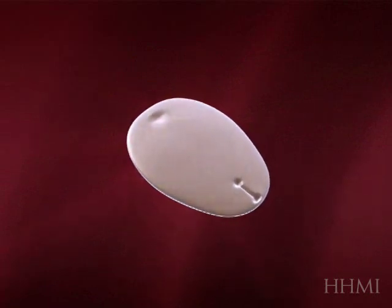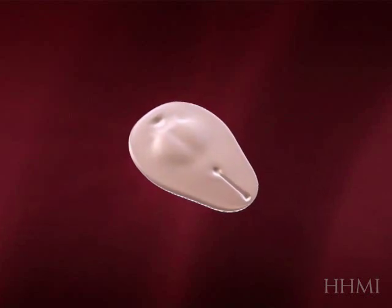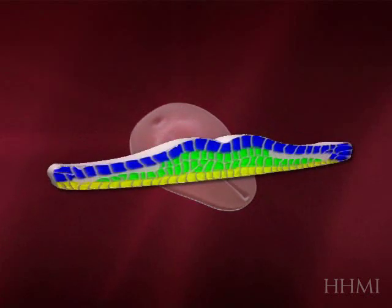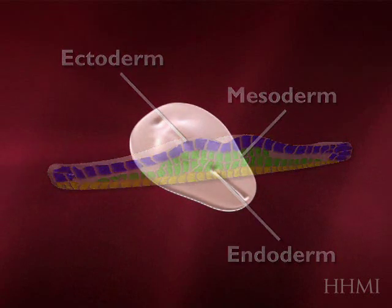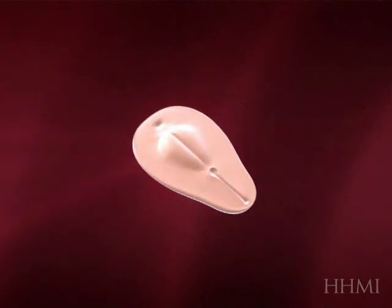Those lines represent sites where cells are migrating in and out. Here's an important stage when the three beginning layers of the embryo — the so-called germ layers — are formed. I'll come back to that in a few minutes.